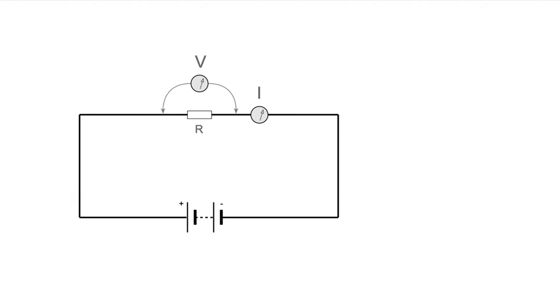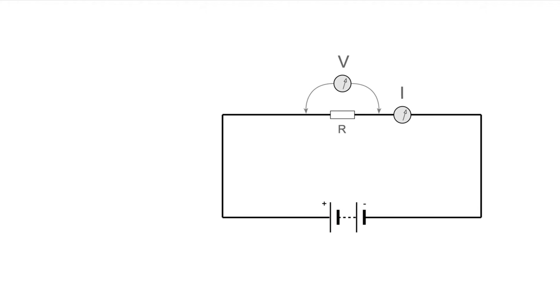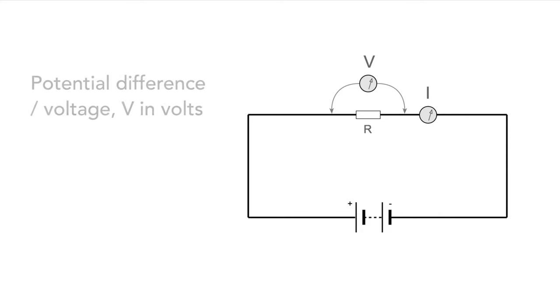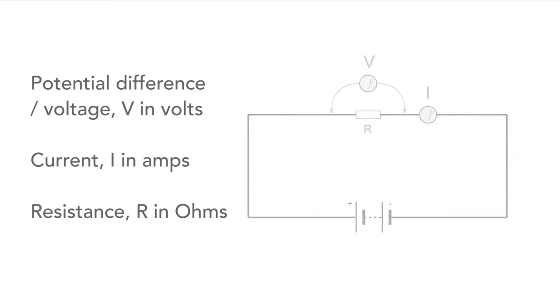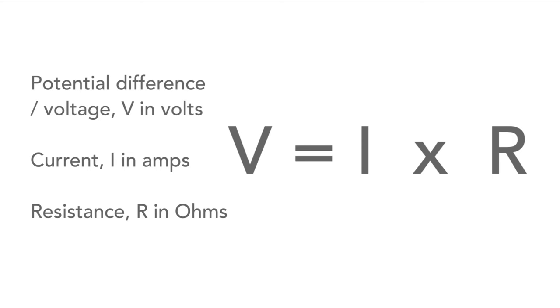It's sometimes easier if we put this down as a simple formula. In the formula we'll see the potential difference or voltage V is measured in volts, the current I is in amps, and the resistance R is measured in ohms. V equals I times R.